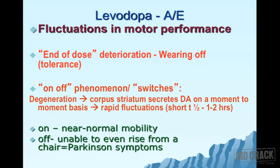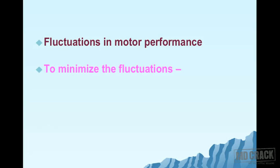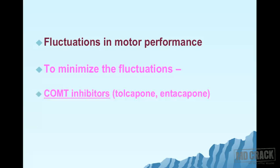To manage fluctuations in motor performance — end-of-dose deterioration and on-off phenomenon — two approaches are used: first, COMT inhibitors such as tolcapone and entacapone to minimize fluctuations; second, use of long-acting dopaminergic agonists.